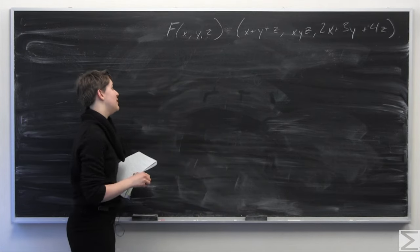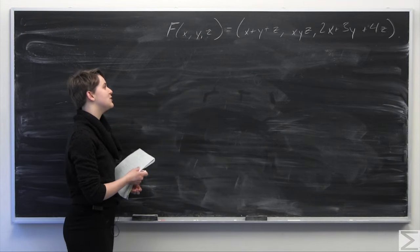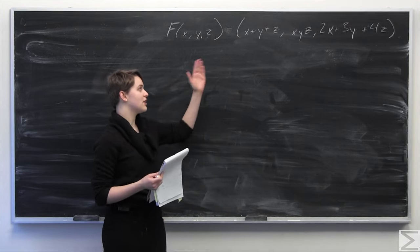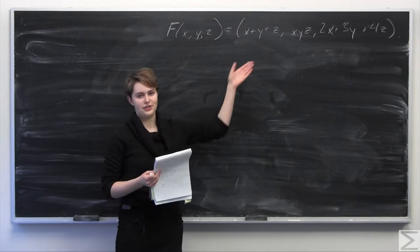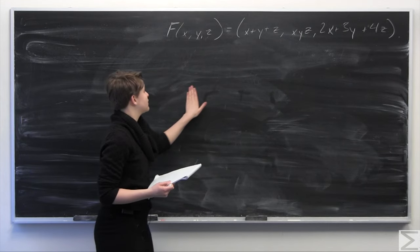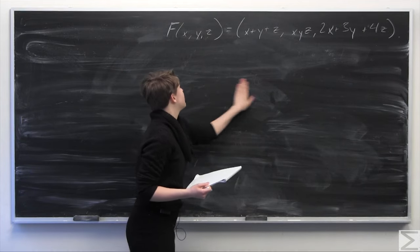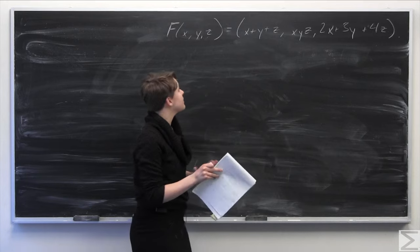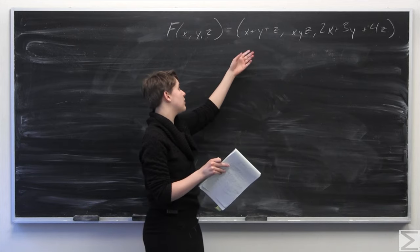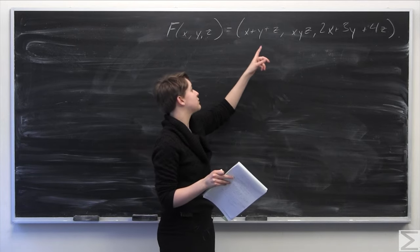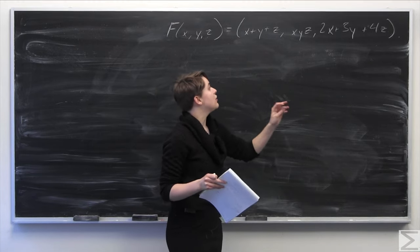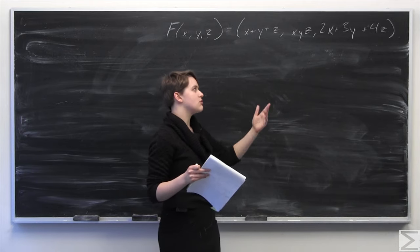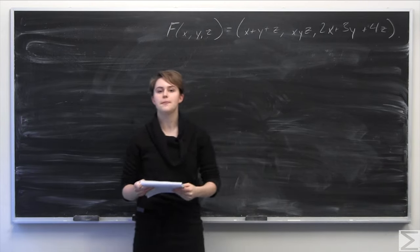This week's Advanced Problem of the Week asks you to calculate the divergence of the curl of a given vector field, where the vector field is a function of x, y, and z. The x component is x plus y plus z, the y component is xyz, and the z component is 2x plus 3y plus 4z.